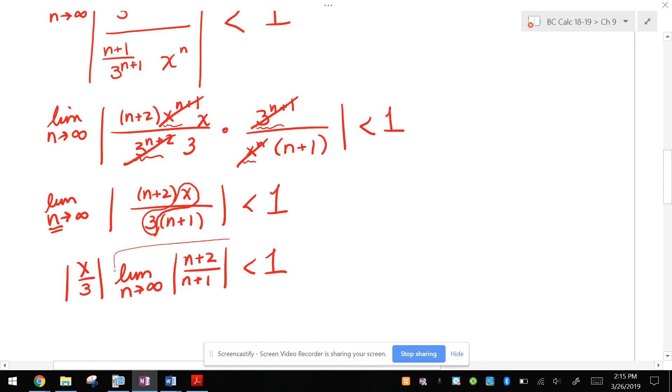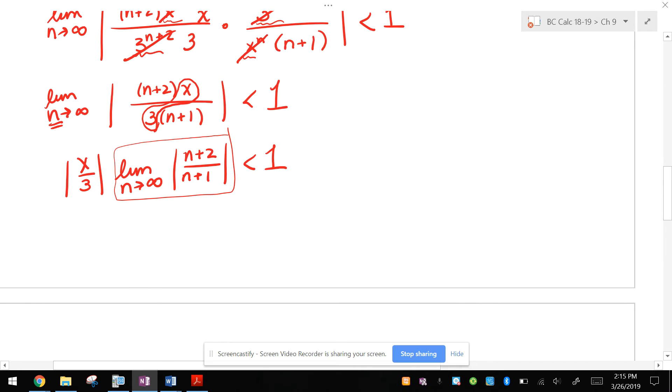Now I'm going to look at this limit as n approaches infinity. n plus 2 over n plus 1 does go to infinity over infinity, but it's the spit in the ocean rule. The top and the bottom have the same degree, so this really just goes to 1.